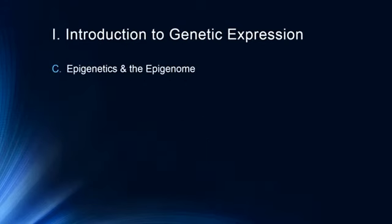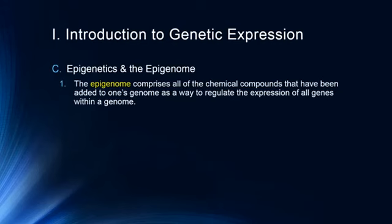The next thing in our introduction to genetic expression is epigenetics and the epigenome. The epigenome comprises all the chemical compounds added to one's genome as a way to regulate the expression of all genes within a genome. Basically, we're born with our genome, and then as a result of all our life's experiences — colds we've been exposed to, injuries, stress, poverty, violence, drug abuse — all of these things alter the way in which our genes are expressed.